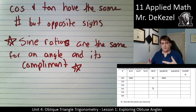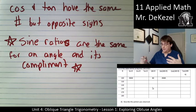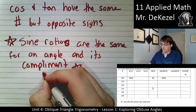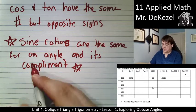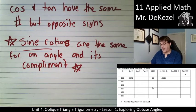Cosine, we can tell what angle it should be based on if it's positive or negative. But sine, we cannot. So we are going to use this fact, that sine ratios are the same for an angle and its complement,